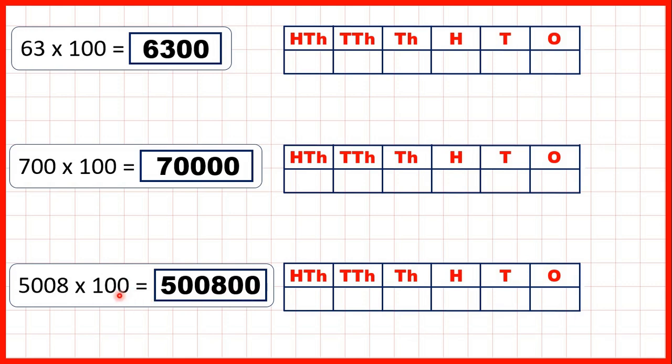Now it's really important to understand that putting two zeros on the end is an effective way to multiply whole numbers by 100, but it doesn't work for decimals. If we have decimals, we need to use a different method.